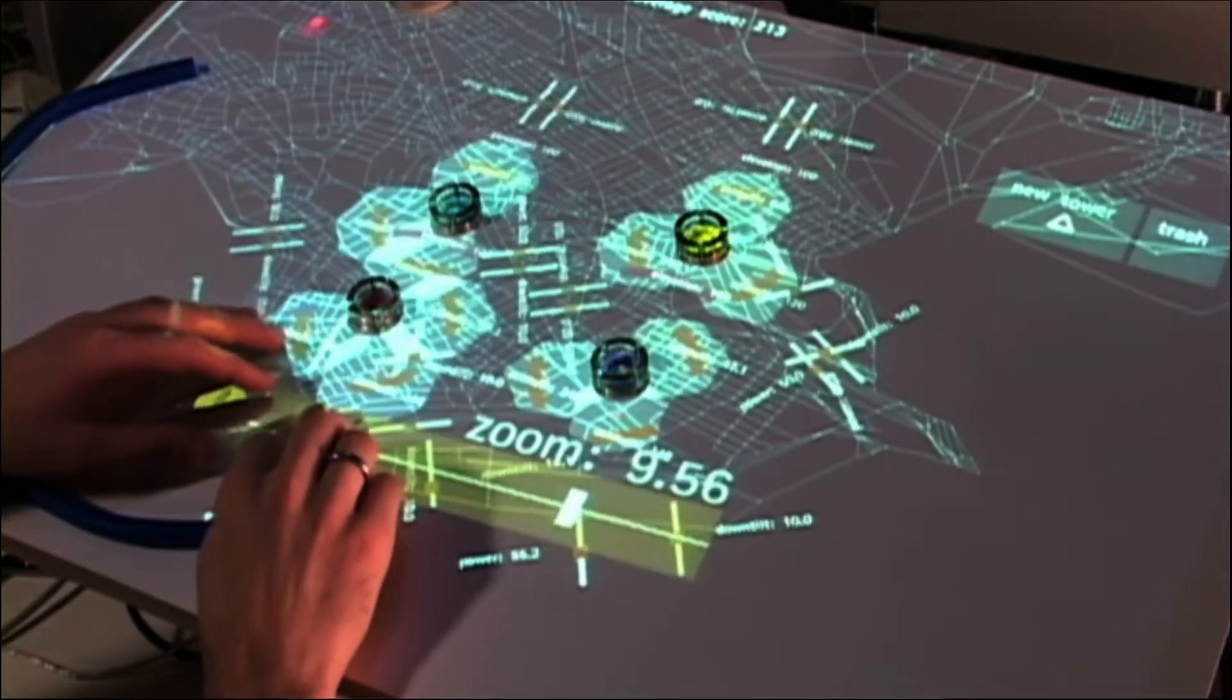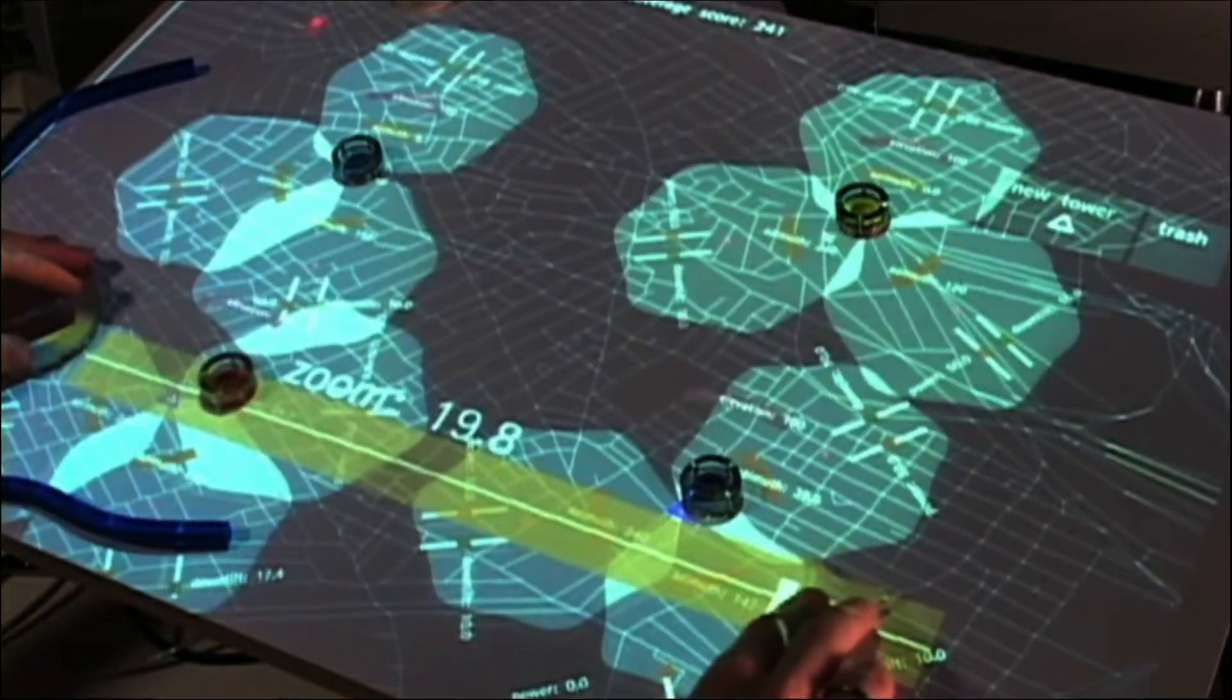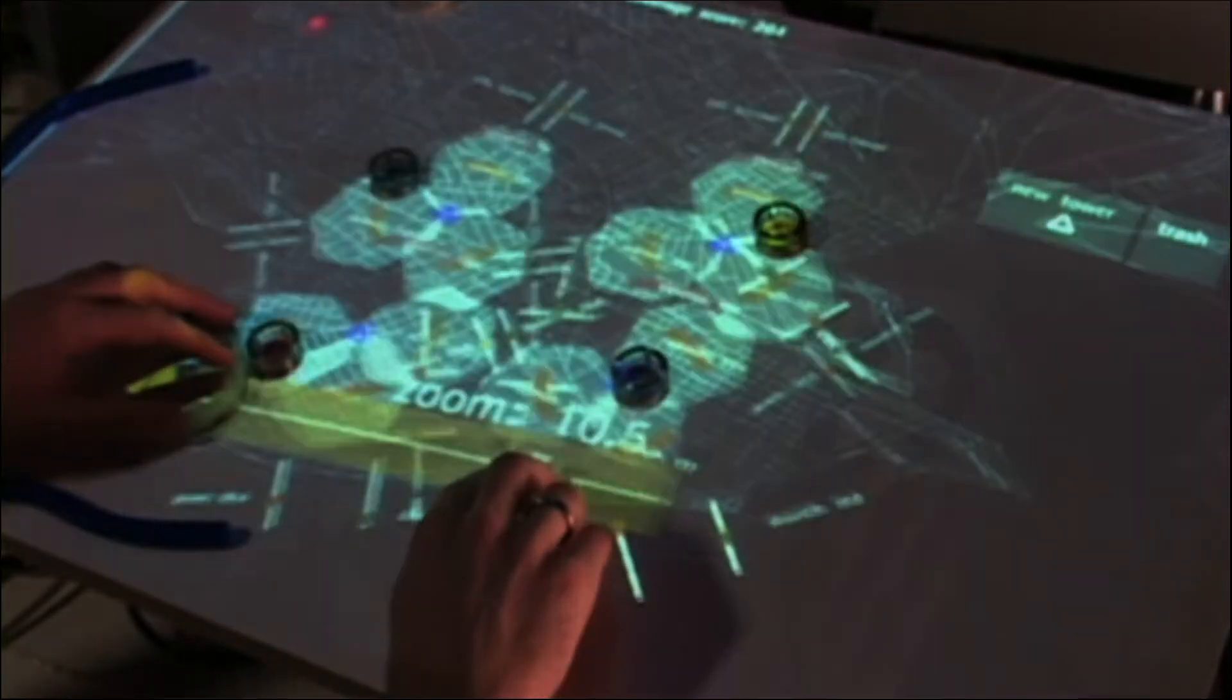The idea here is that each of the physical objects on the table represents a different cell phone tower. And we can move them around. The computer is also moving them around to try to optimize the cell phone coverage.